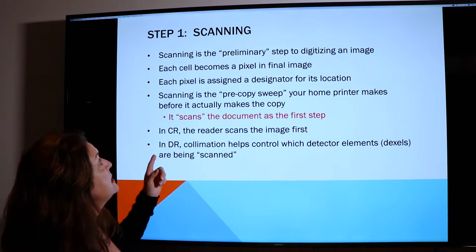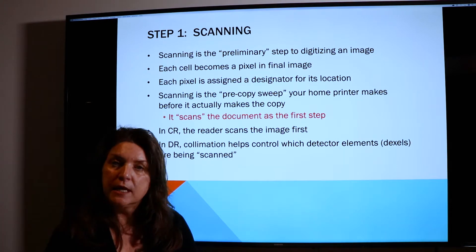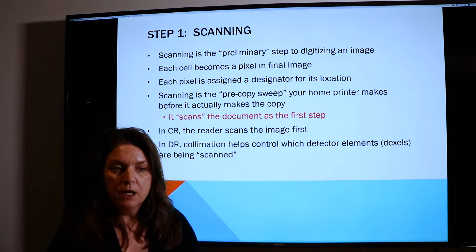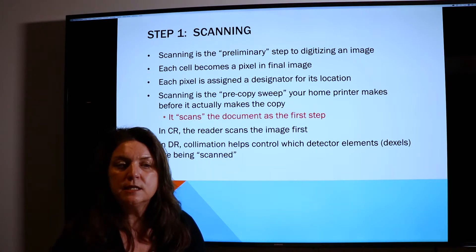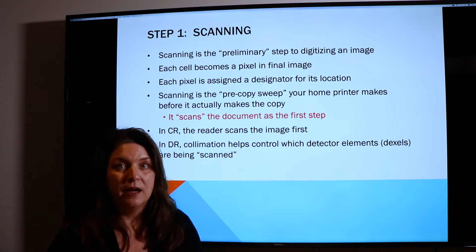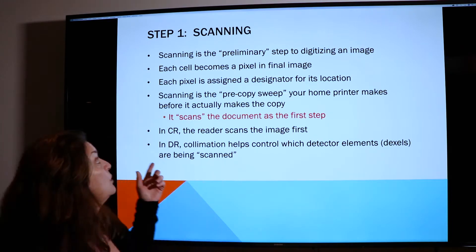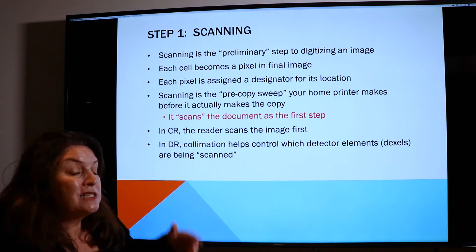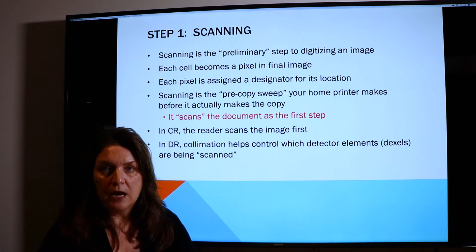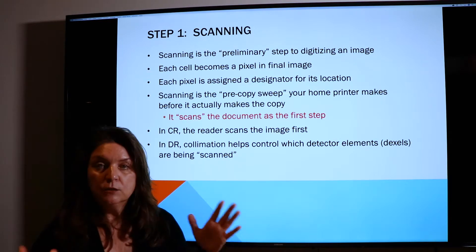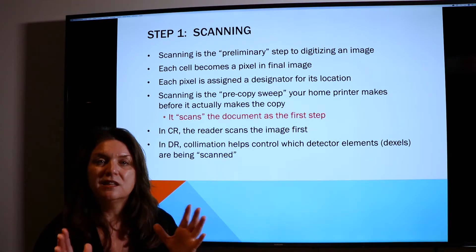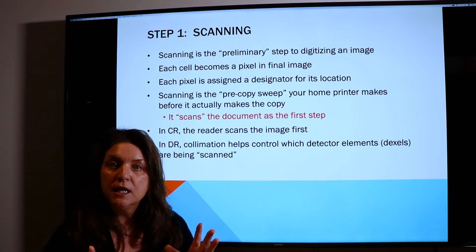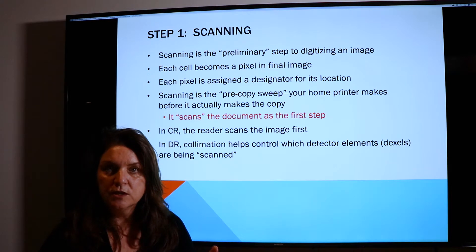Step one is scanning — that's the preliminary step. It's scanning the image, doing a sweep. You hear this when you make a copy in a copier; it actually pre-scans the image, and that's what it's actually doing. In CR, the reader actually does the scanning. In DR, when you collimate the image, it is in effect doing the scanning for you. It's just dividing the image into pixels to be read.